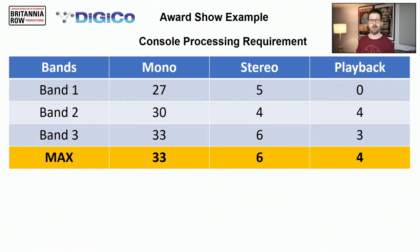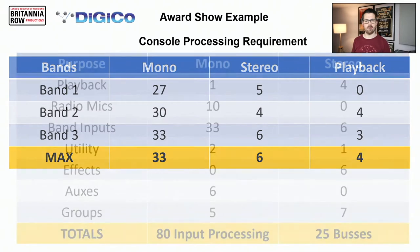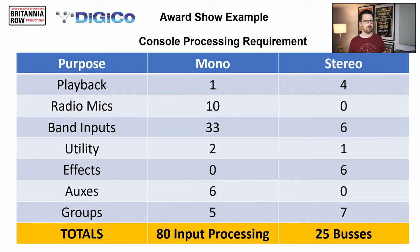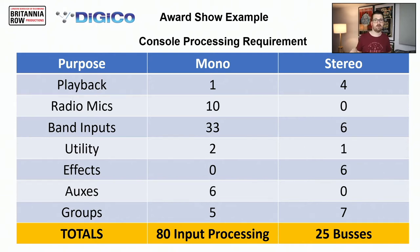Once I've worked this out, I need to determine my other requirements in terms of input processing. So I've got playback, radio mics, the band inputs we just worked out, utility items such as shouts, voice of god mic, maybe a laptop for a smart rig, some effects — reverbs and delays — then I need some aux sends to feed into my effects units, and then I've got some groups, which I'll go into in a bit more detail.